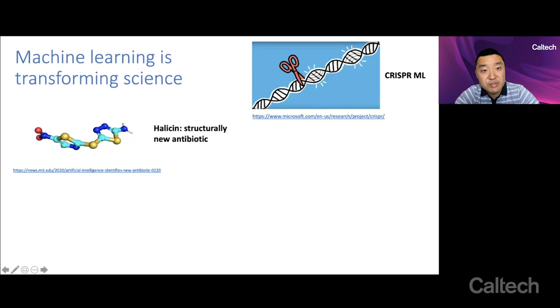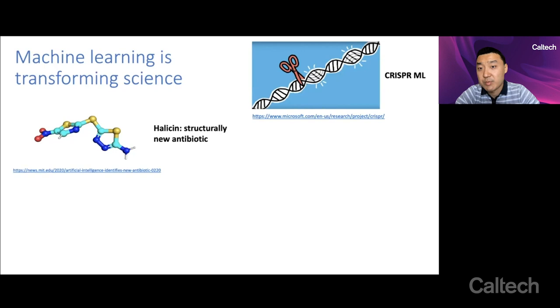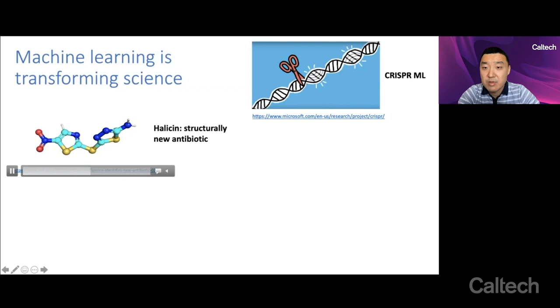Machine learning has been instrumental in improving the efficiency and precision of gene editing, such as the CRISPR-ML project, a collaboration between the Broad Institute and Microsoft Research. As George mentioned, machine learning was crucial in the design of state-of-the-art protein folding technologies such as AlphaFold.